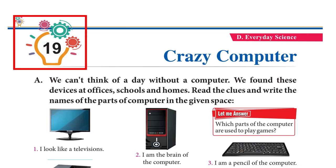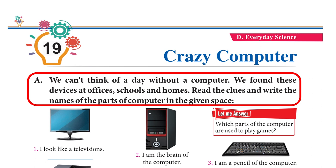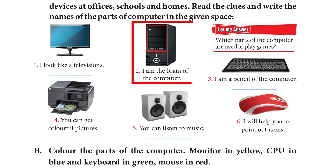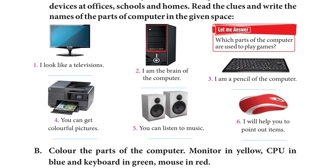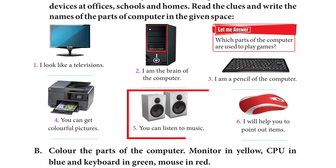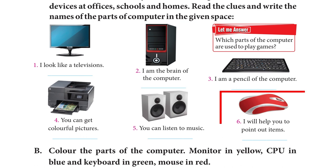Chapter 19: Crazy Computer. We can't think of a day without a computer. Read the clues and write the names of the parts: I look like a television — Monitor. I am the brain of the computer — CPU. I am a pencil of the computer — keyboard. You can get colourful pictures. You can listen to music. I will help you to point out items — Mouse.